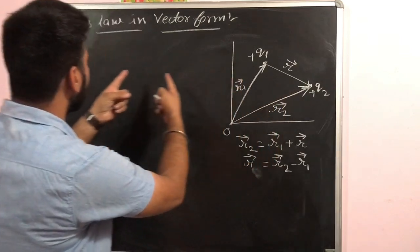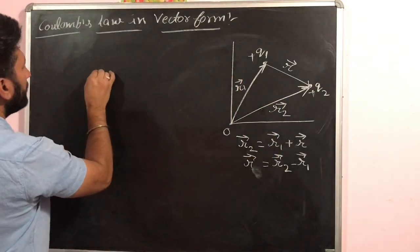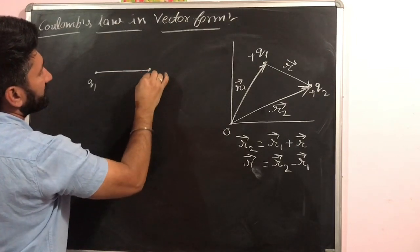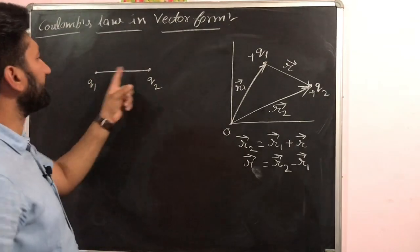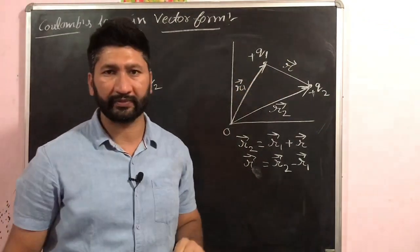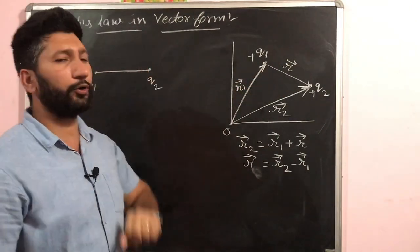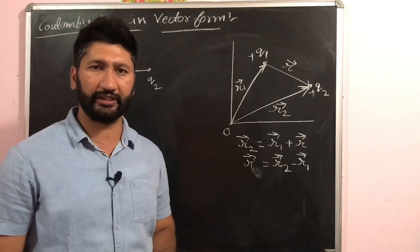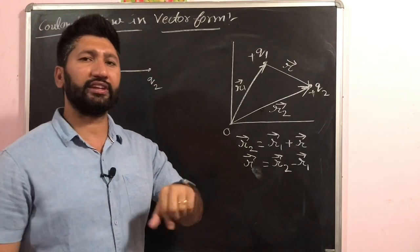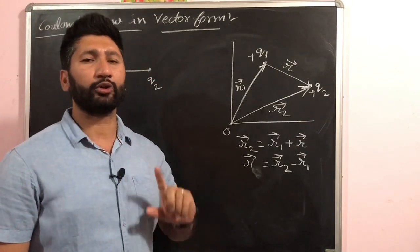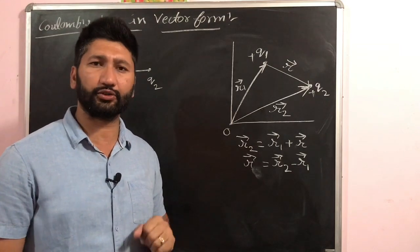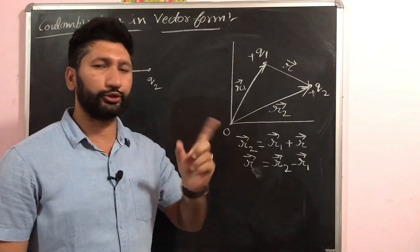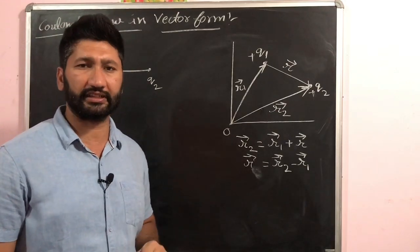In vector form, we need to show direction. There are two charges q1 and q2. If both are positive, they exert repulsive forces on each other. In vector form, direction is shown using unit vectors. The displacement vectors r12 and r21 must be identified clearly.